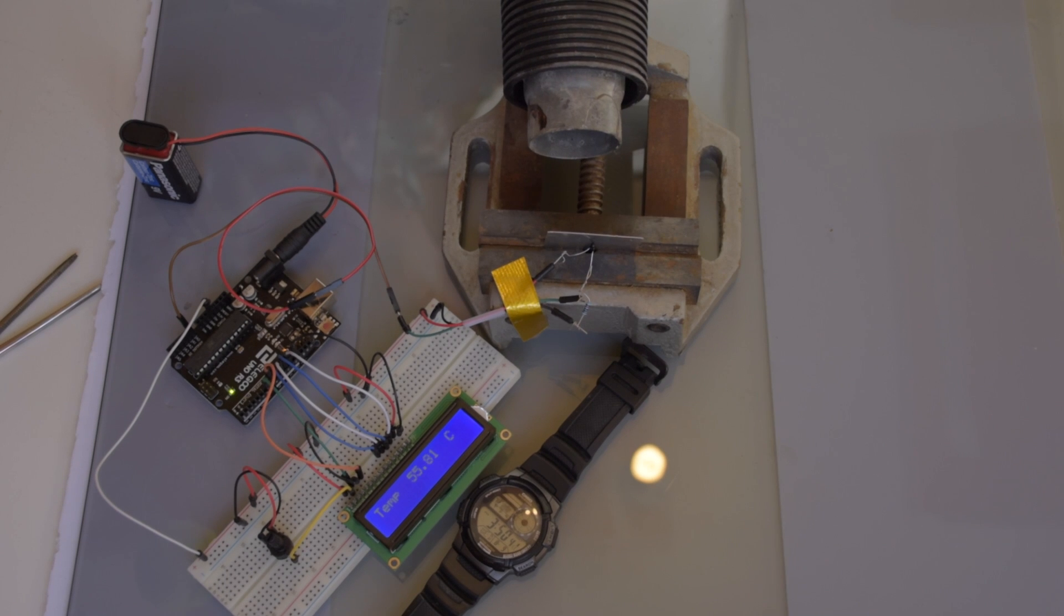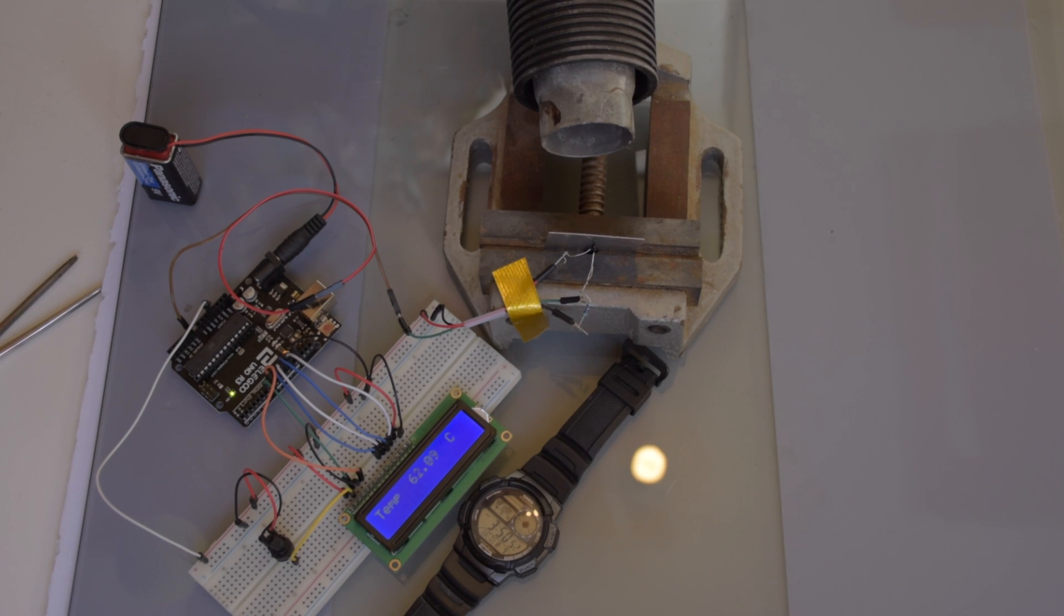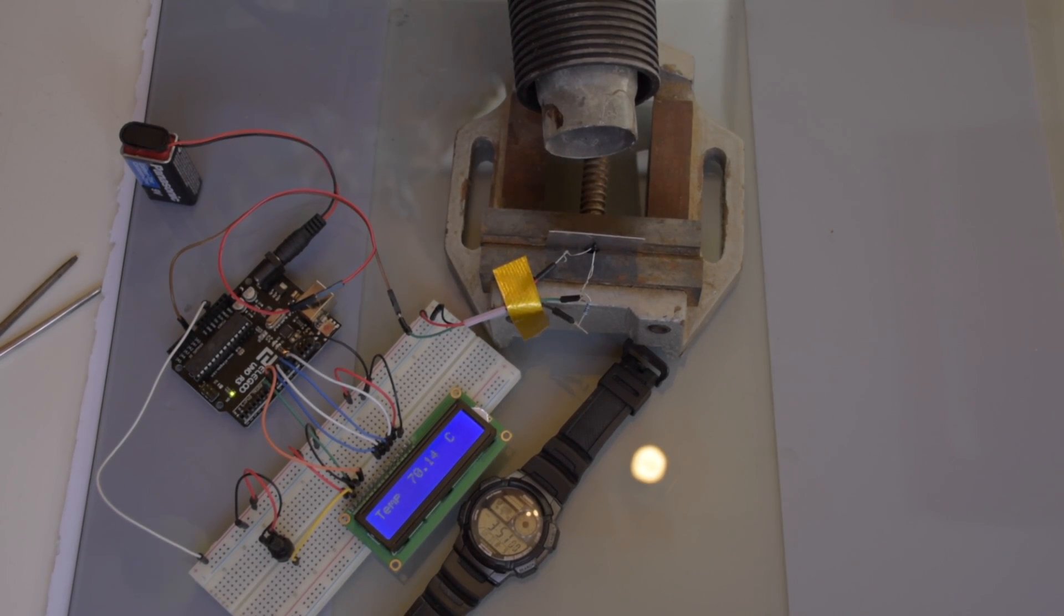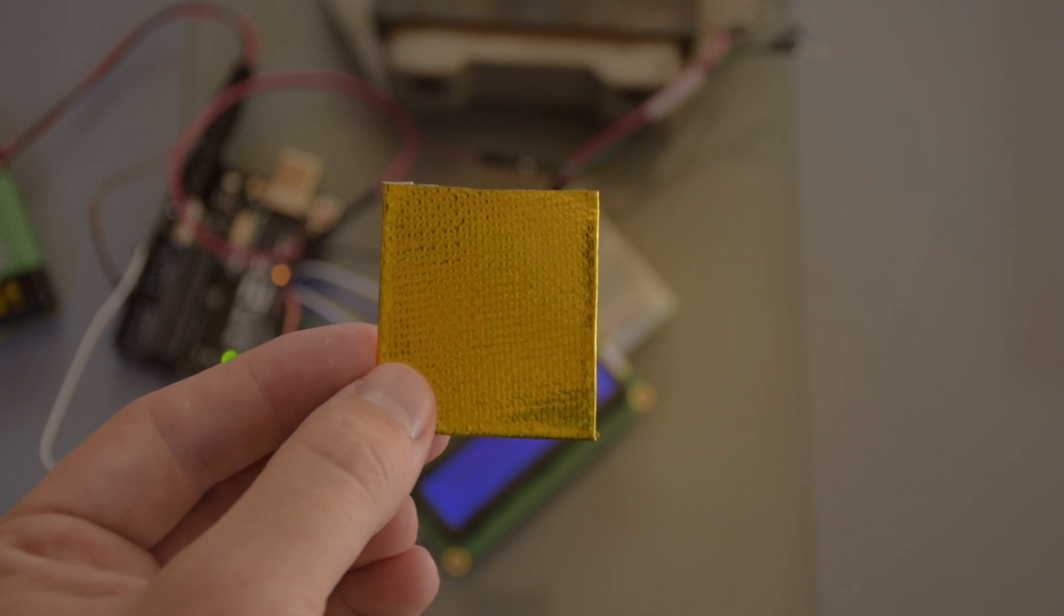Each sample was placed in the vise with a temp sensor touching it. It was then heated for 30 seconds. Each of these clips are at double speed. Next up is the eBay Cheap Stuff. Each sample is only one layer on the metal panel.